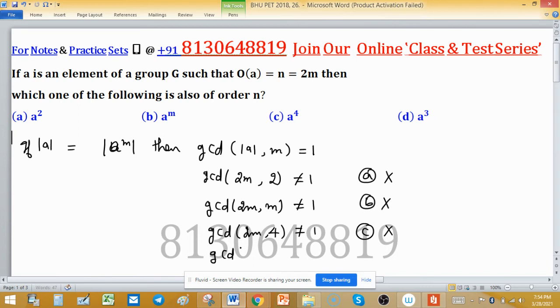Here, GCD of 2M with 3 may be equal to 1 if M is not a multiple of 3. Like if M is equal to 3, then this 2M is 6.